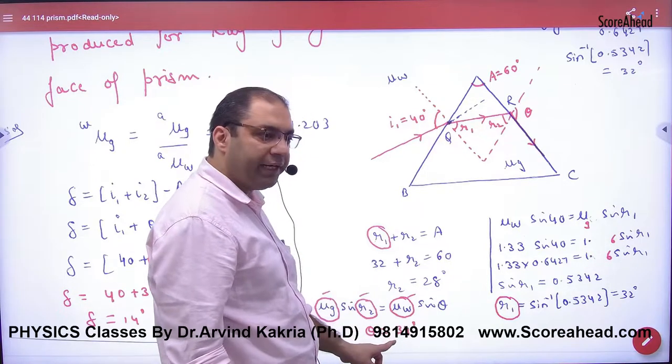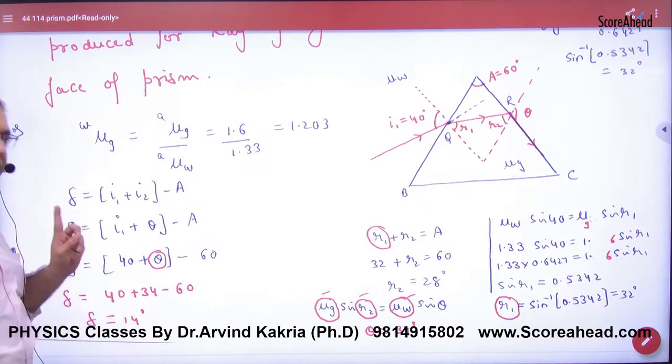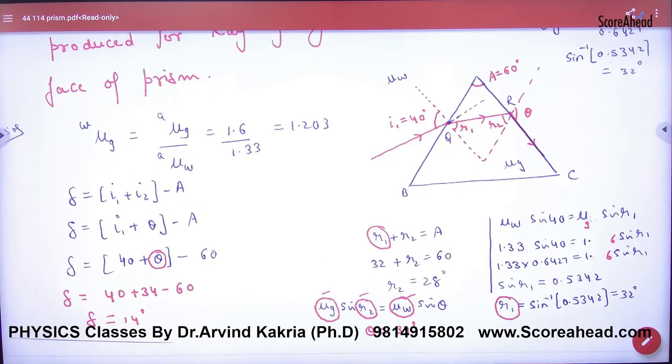This also knows what will happen - theta. When we put this theta here, the answer will come. That means two times Snell's law and one time deviation formula. It's a long work. Point clear here?